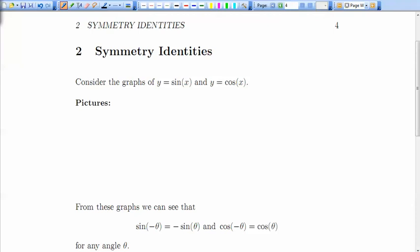Hello. In this video we're going to talk about the symmetry identities. These are identities that come out of the symmetry of the graphs of y equals sin x and y equals cos x.